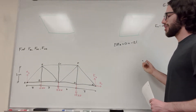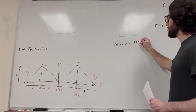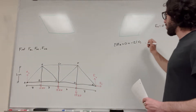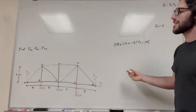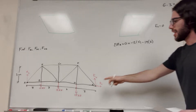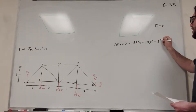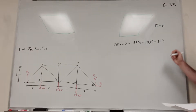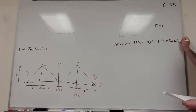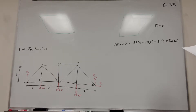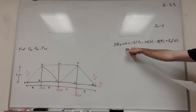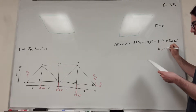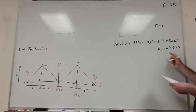So negative 12 times its distance of three meters. Then the 14 kN load pushes down — it also causes clockwise rotation — so minus 14 times six. Then minus 18 times its distance of nine. Finally, E of Y is pushing up causing counterclockwise rotation, so plus E of Y times twelve. Solving this, E of Y is equal to 23.5 kilonewtons.